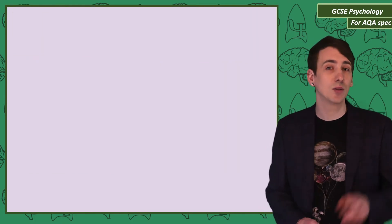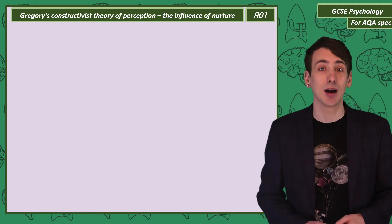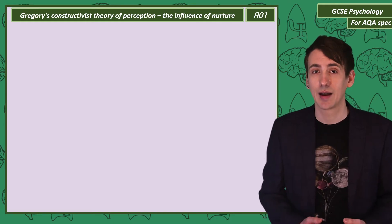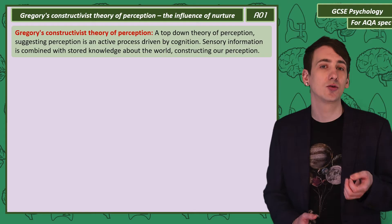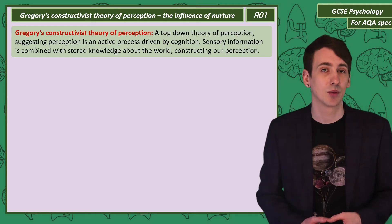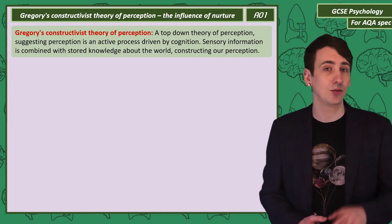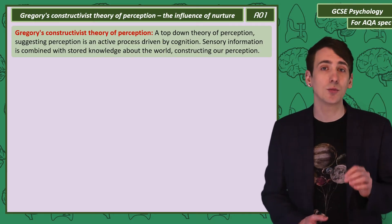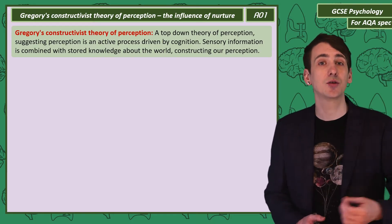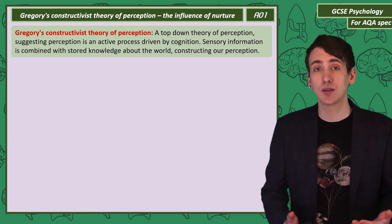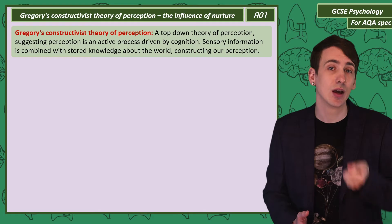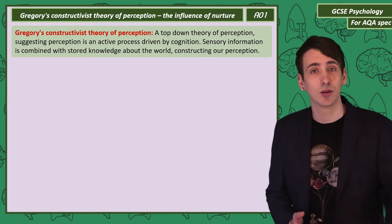There are two competing theories on how our mind makes sense of sensory information. Let's start with Gregory's constructivist theory of perception. We call this a top-down theory of perception. This suggests our cognitive processes actively construct our perception, using sensory information but combining it with stored knowledge, schemas and expectations into what we ultimately experience.